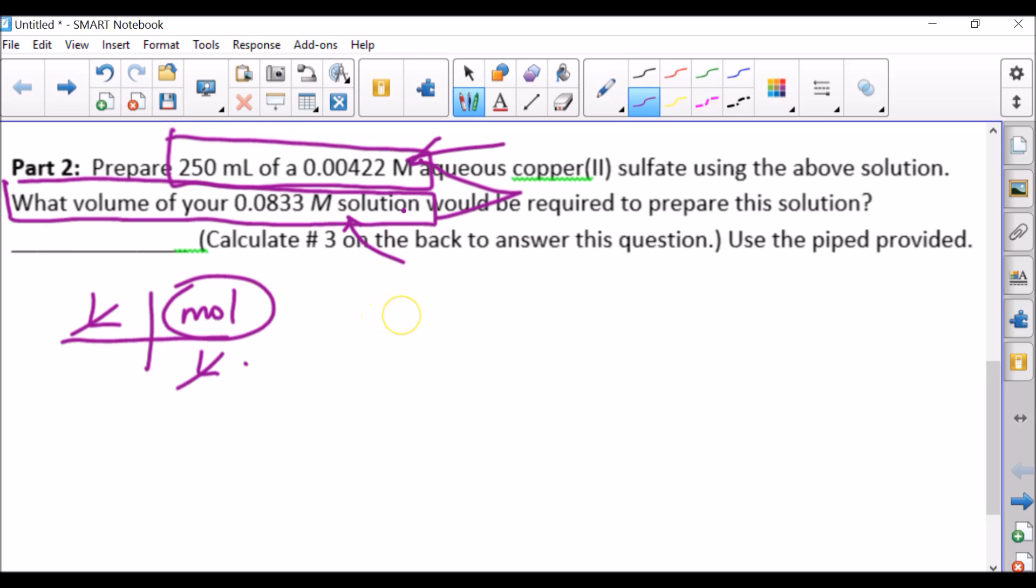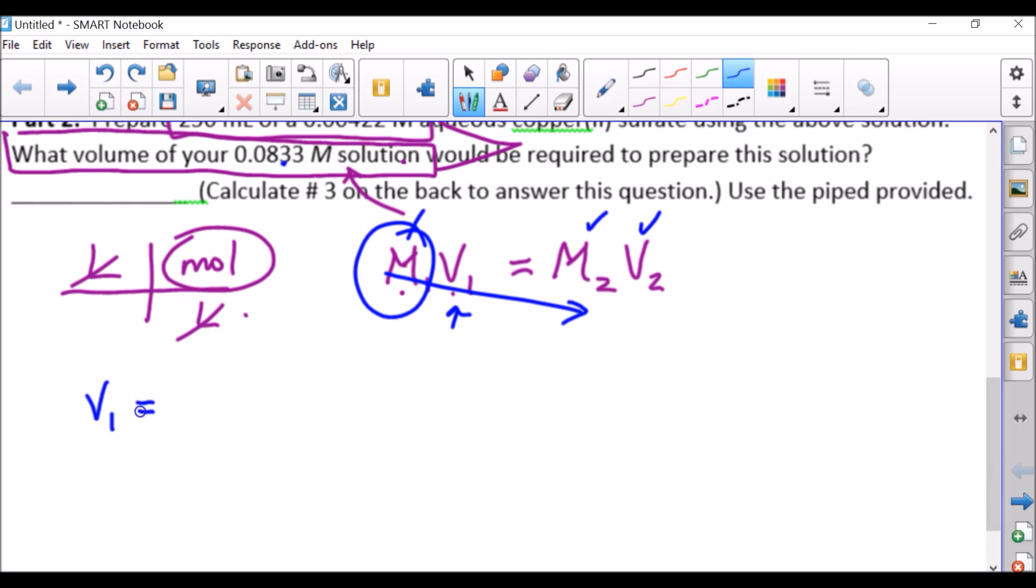However, the number of moles or the number of particles don't change for these two solutions. It's the amount of water that changes. So we want to find out how many moles we actually have here, and that will be equal to the amount of moles that we have in our concentrated solution. So there's this neat equation, where the molarity of the initial solution times the volume of the initial solution is equal to the molarity of the final solution times the volume of the solution. So let's rearrange these variables. We're going to divide by our initial molarity.